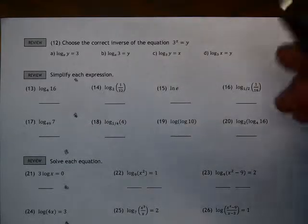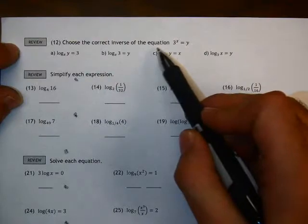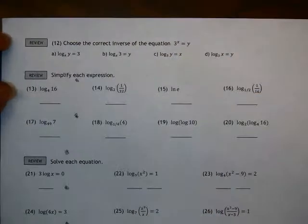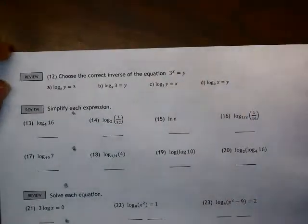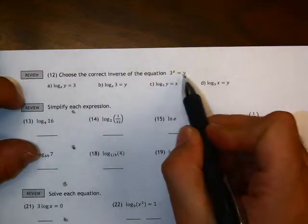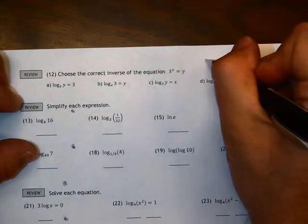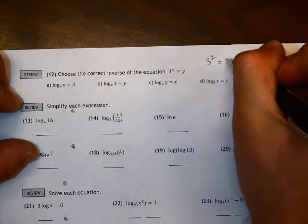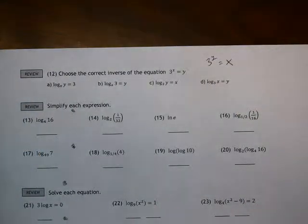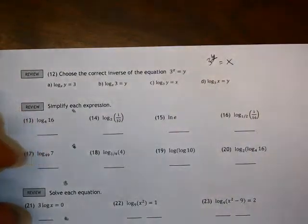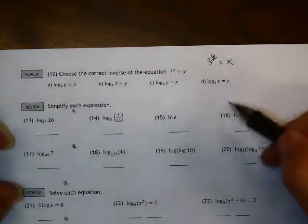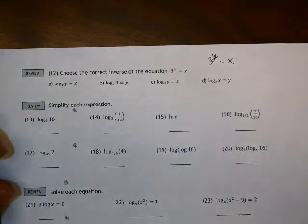Number 12 says choose the correct inverse of the equation 3 to the x equals y. To start finding the inverse, what we usually did is we took the x and y and reversed them. So this became 3 to the y power equals x. And then to finish writing this as the inverse, our goal was to write this as y equals. We wanted to solve for y. And the only way to do that is to write it in log form.